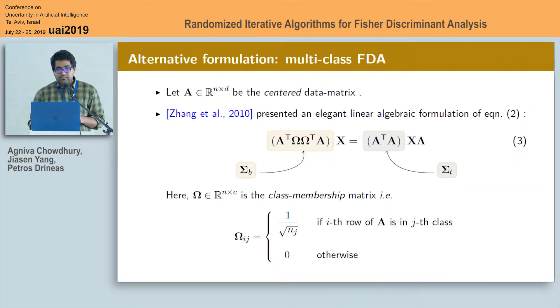Next, let A be the mean centered data matrix of order N by D and there is a very elegant linear algebraic formulation of multi-class FDA from this 2010 JMLR paper which actually expressed the between class scatter matrix sigma B as A transpose omega omega transpose A